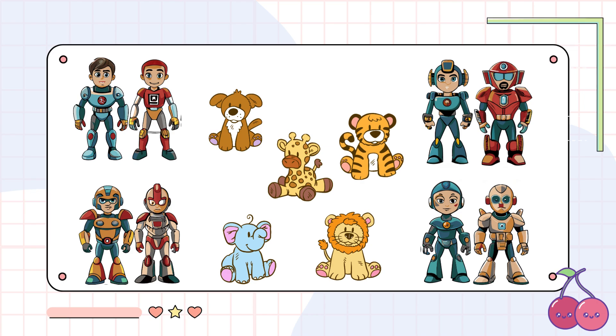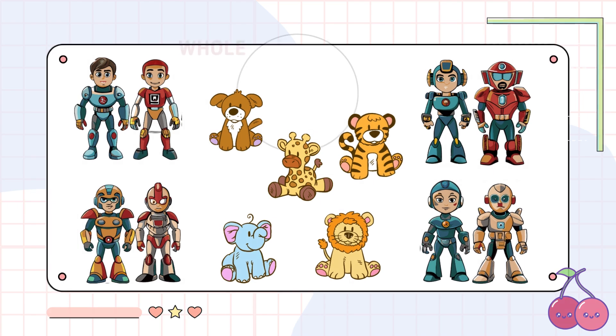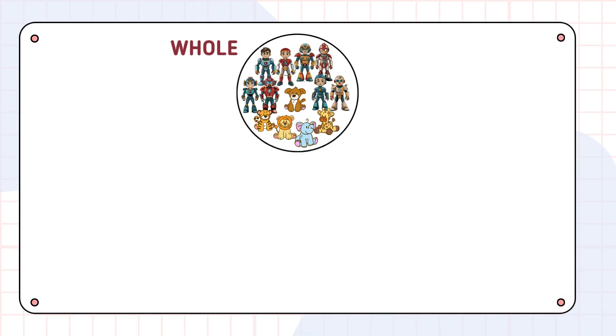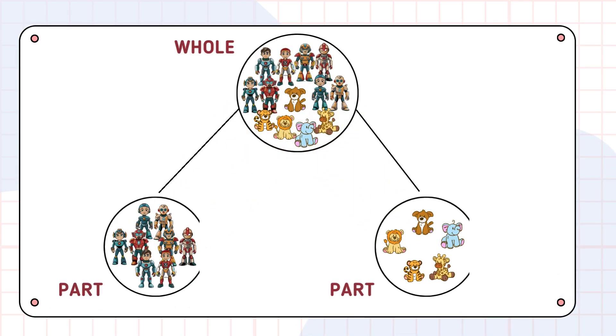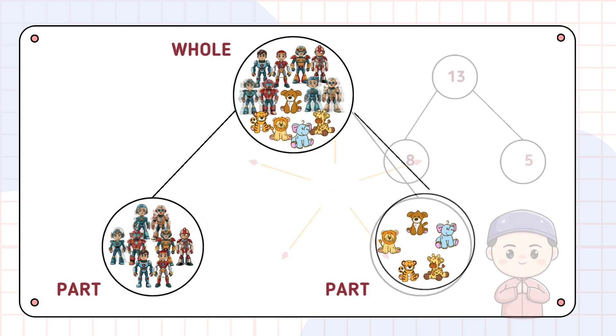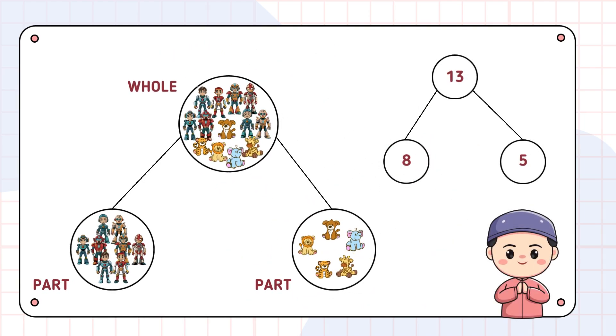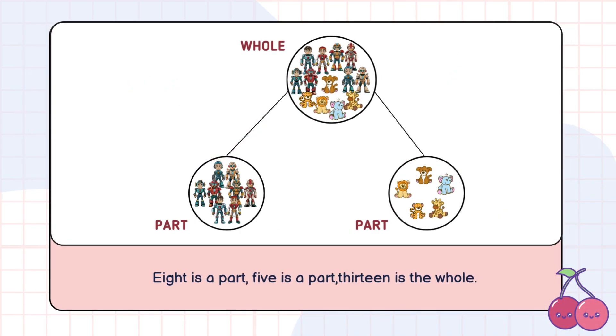Got it? Let's check your answer together. Using our cherry diagram, the whole is 13 toys and the parts are 8 and 5. The parts might look different. Action figures and stuffed animals. But when you put them together, they always form the whole. Pretty cool, right? Let's keep practicing.